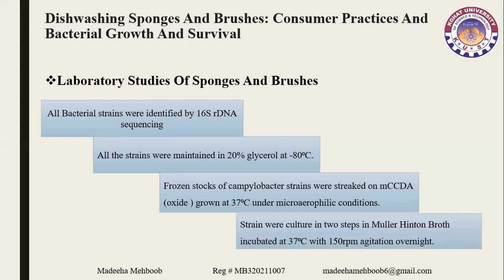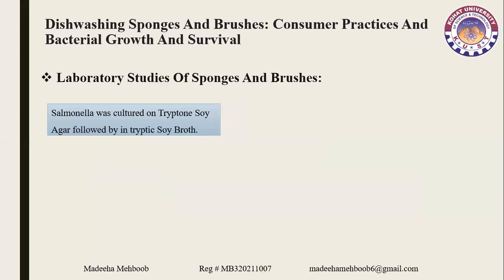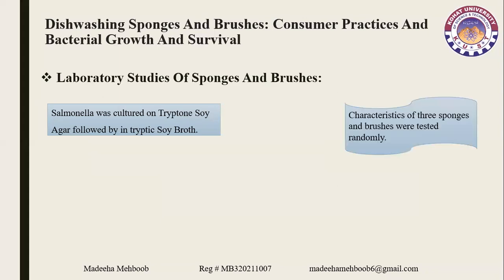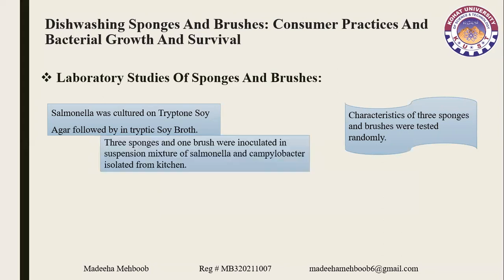Frozen stocks of Campylobacter strains were streaked on modified charcoal cefoperazone deoxycholate agar and grown at 37 degrees centigrade under microaerophilic conditions. Working cultures were grown in two steps in Mueller Hinton broth incubated at 37 degrees centigrade with 150 rpm agitation overnight. Salmonella was cultured on tryptone soy agar followed by tryptic soy broth. Characteristics of three sponges and brushes were tested using a suspension mixture of Salmonella and Campylobacter isolated from the kitchen.